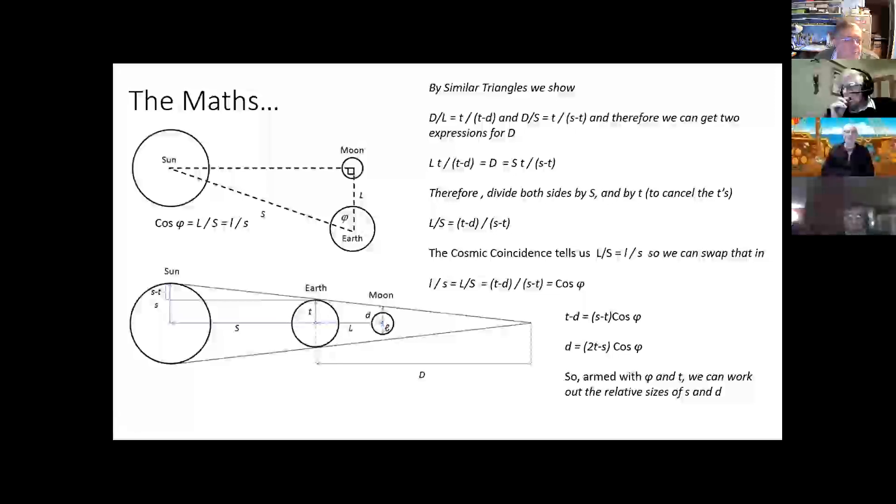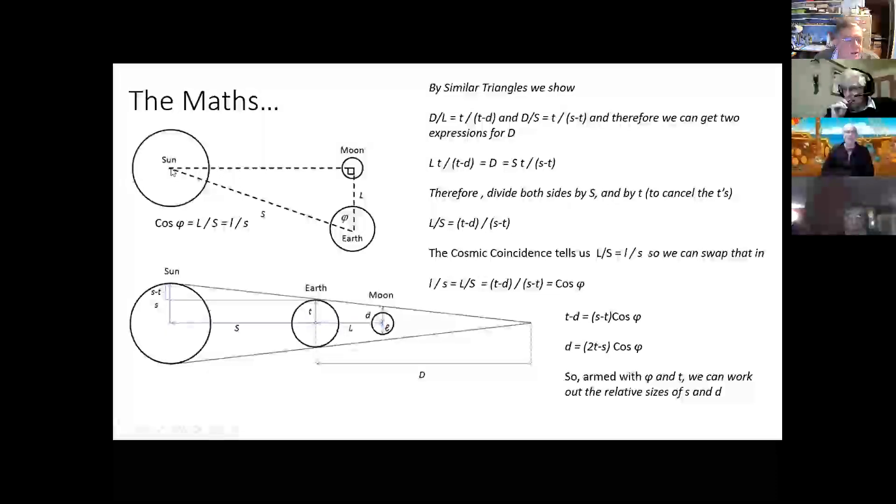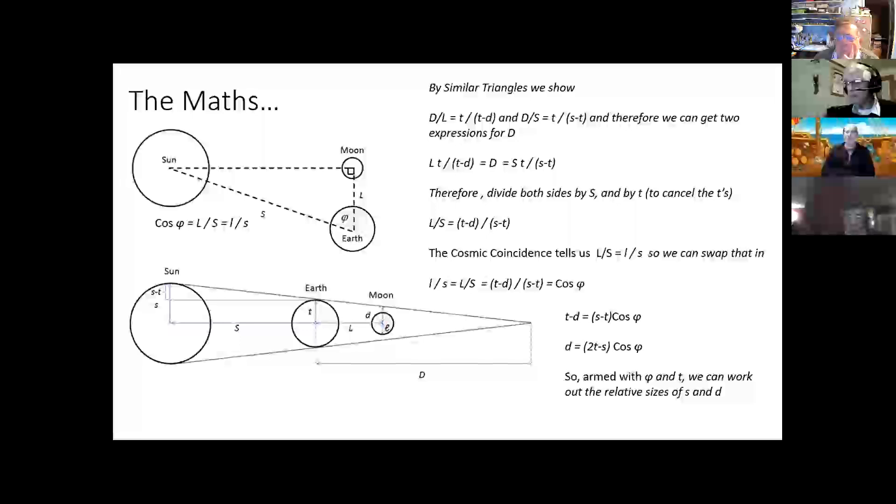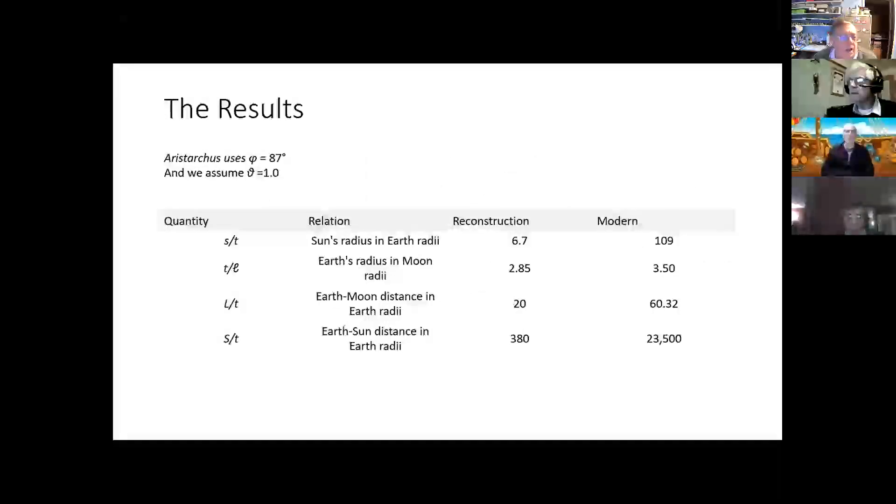But it also reasoned that, because of the cosmic coincidence, that if the length S to L ratio must be the same as the ratio of the diameter of the Moon to the diameter of the Sun. And so you could start to feed these numbers into the rest of the calculation here, and you can do all the maths down here and end up with a relationship between the diameter of the shadow here and the size of the Sun and the size of the Earth. He can't quite solve everything from there, but what he came up with was some numbers for some of the ratios involved.